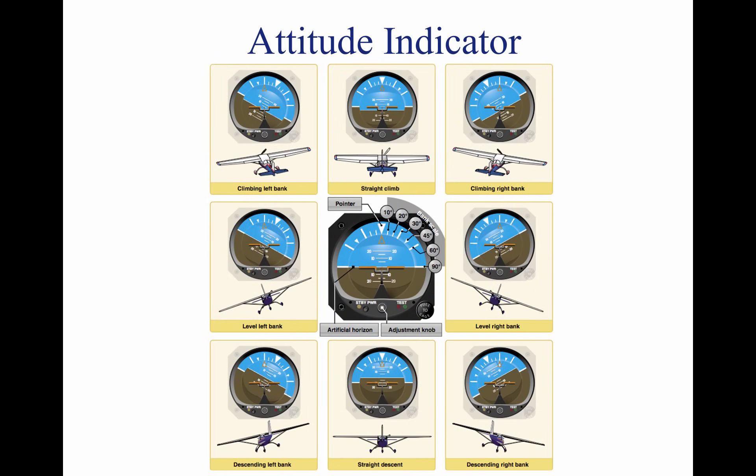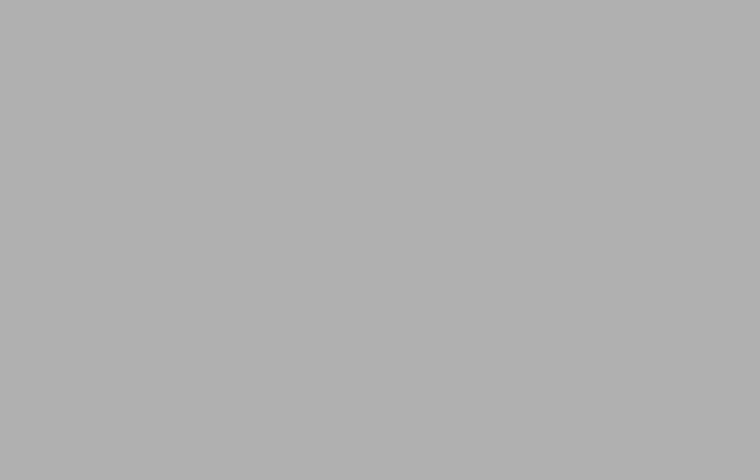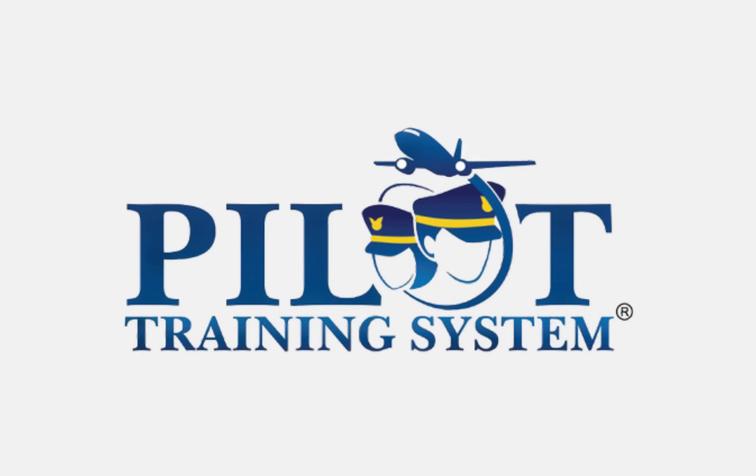Every pilot should be able to interpret the banking scale. Most banking scale indicators on the top of the instrument move in the same direction from that in which the aircraft is actually banked. The relationship of the miniature aircraft to the horizon bar should be used for an indication of the direction of bank. The attitude indicator is reliable and the most realistic flight instrument on the instrument panel. Its indications are very close approximations of the actual attitude of the aircraft.